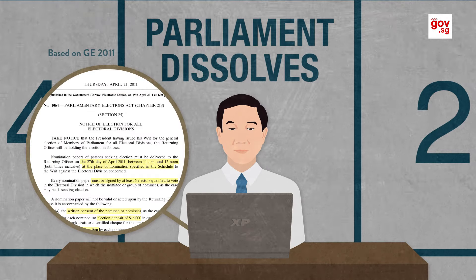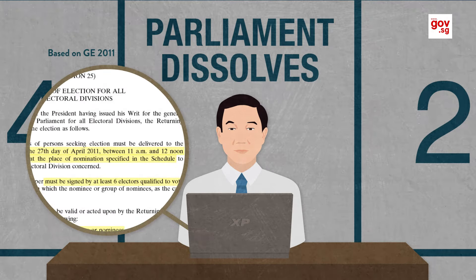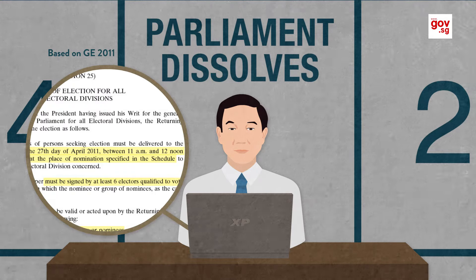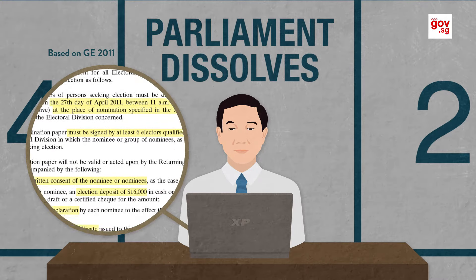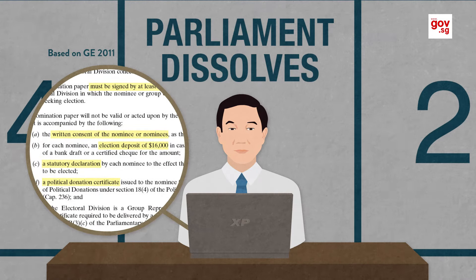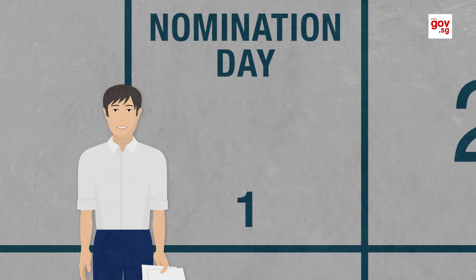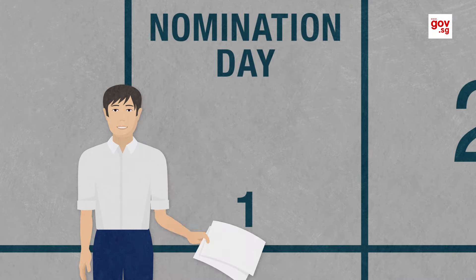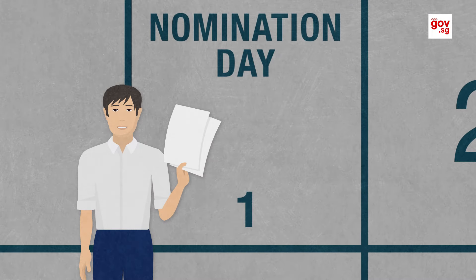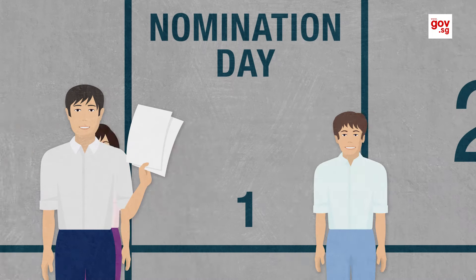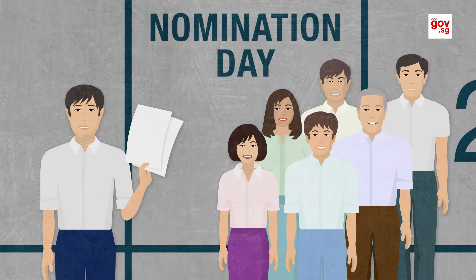The RO would then issue the Notice of Election stating the date, time, and place for the nomination of candidates. The notice also states the requirements for candidates. On nomination day, candidates present their relevant documents accompanied by their subscribers.